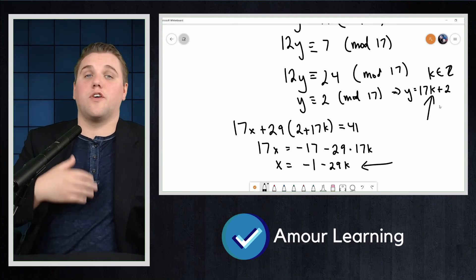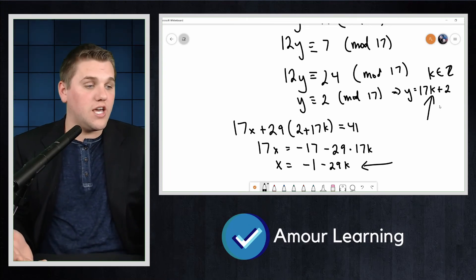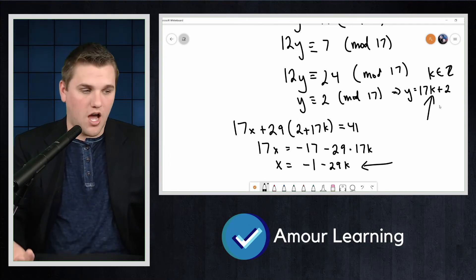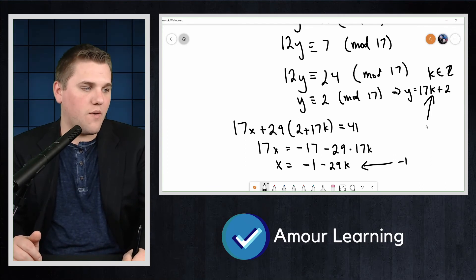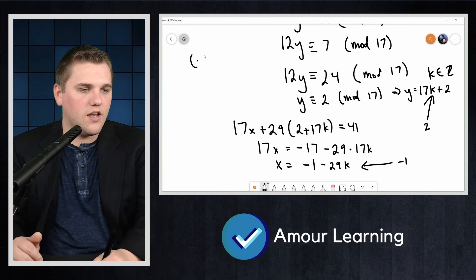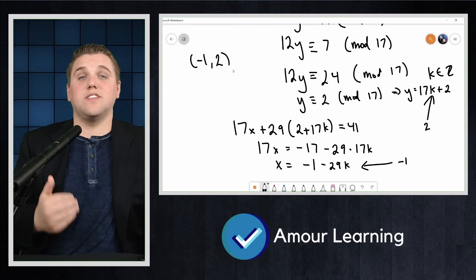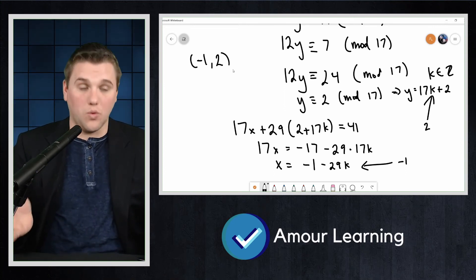We could check this for a few cases. If k = 0, the solution is (-1, 2). And yes, negative 17 plus 2 times 29 equals 41.